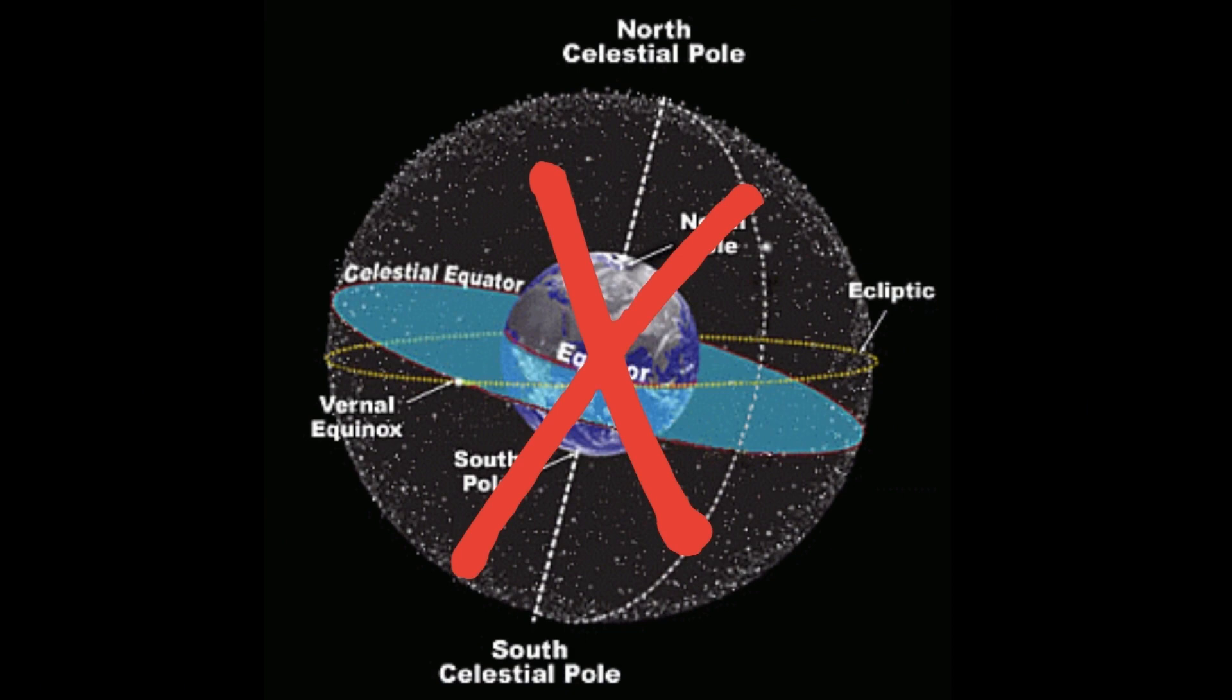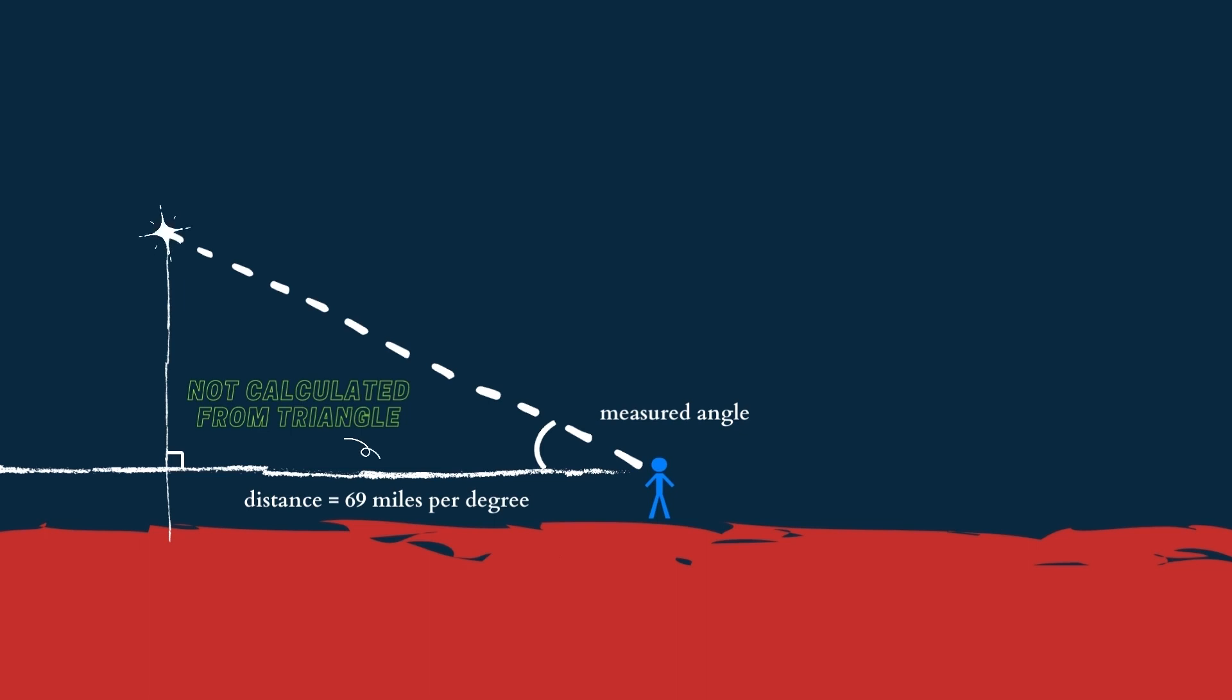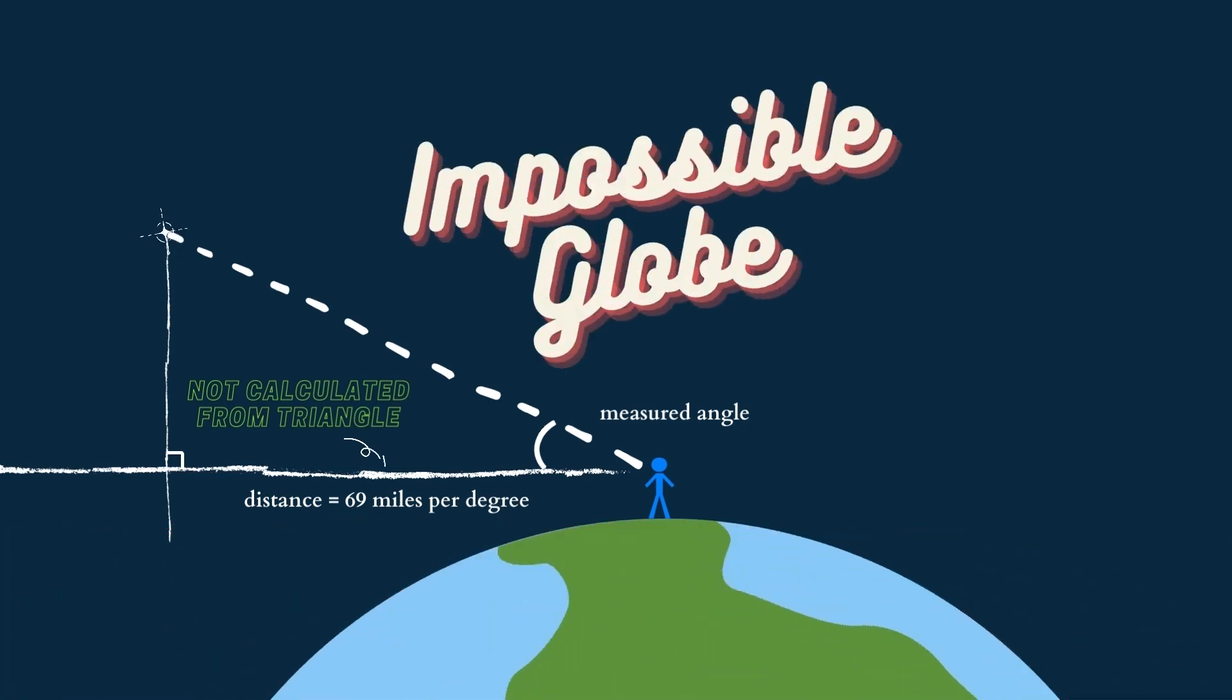We just need to show that celestial navigation doesn't work on a globe, and that will prove the flat earth. So now we just draw a globe under the flat earth triangle method, and voila. The sextant proves globe earth is impossible.